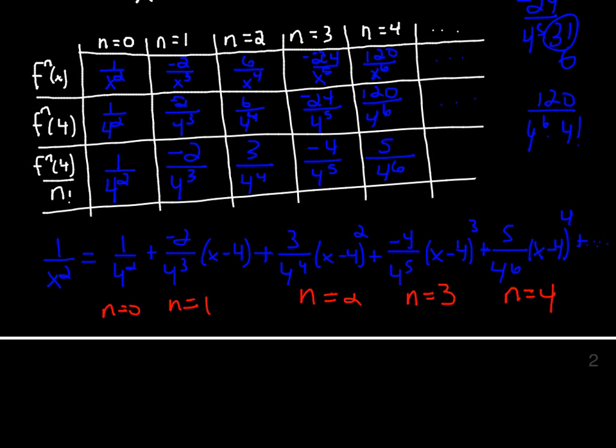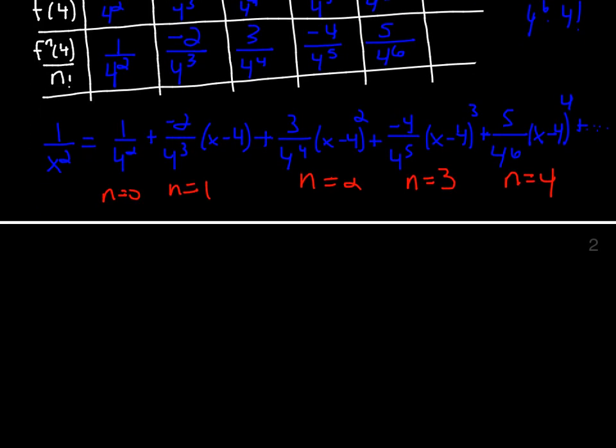Well, the power on 4 is n plus 2. We have alternating sign starting with positive, so we'll say negative 1 to the n. We're going to have x minus 4 to the n. And then lastly, we have the constant that's in the numerator: 1, 2, 3, 4, and 5 is what we see here. And it looks like it's just 1 plus n, so we'll call it n plus 1.